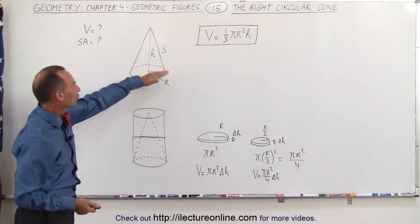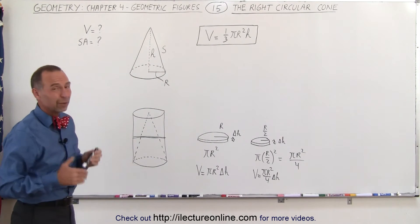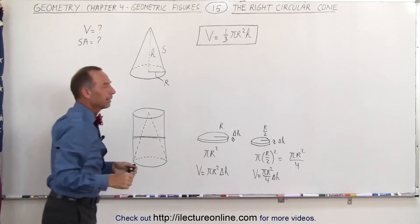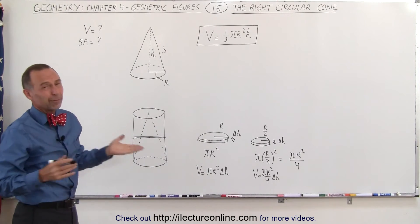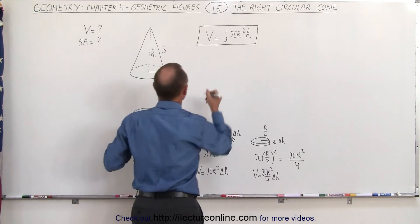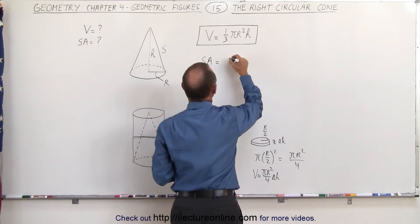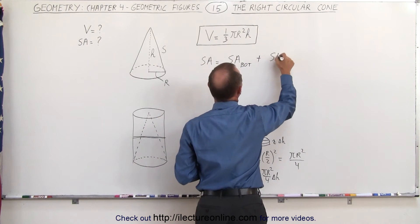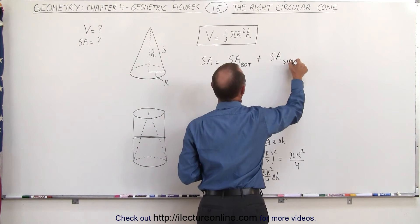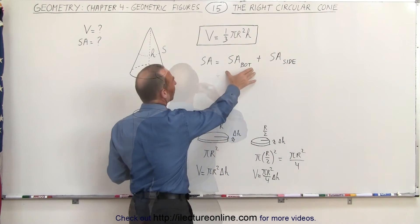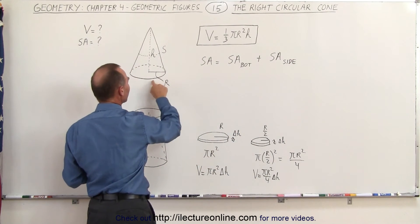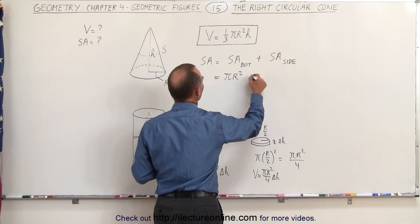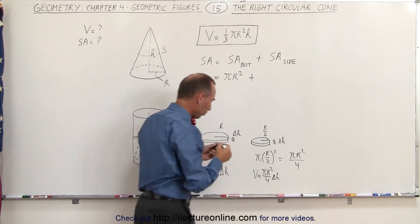Now we want to find the surface area of this right circular cone. That would be equal to the surface area of the bottom plus the surface area of the side. The surface area of the bottom is easy — that's simply the area of a circle, pi R squared. But how do we find the surface area of the side?